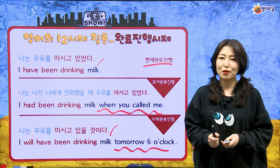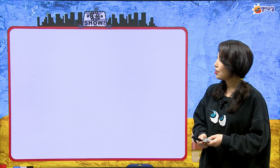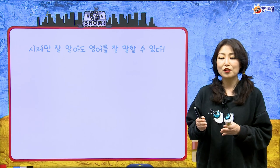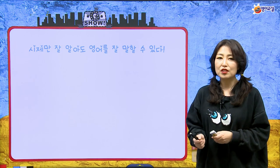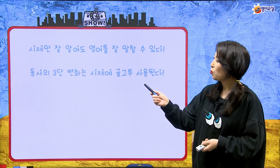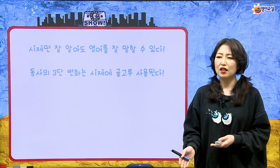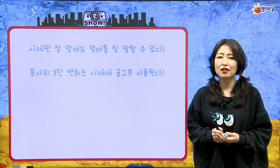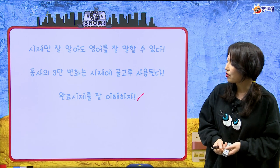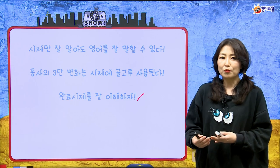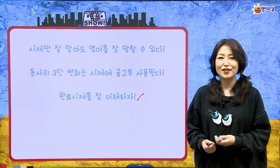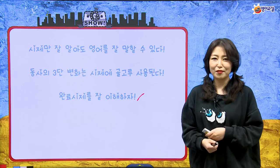완료 시제 예문까지 살펴봤고요. 시제만 잘 알아도 영어를 잘 말할 수 있어요. 시제를 올바르게 쓰는 게 정확한 영어를 구사하는 방법이고요. 영어로 말할 때 시제를 적극 활용하면 좋겠어요. 동사의 3단 변화는 시제뿐만 아니라 수동태 등 여러 형태로 사용되니 꼭 잘 기억하면 좋겠어요. 완료 시제를 잘 이해하고 적절하게 쓰면 영어를 잘하는 것 같다는 느낌을 줄 수 있어요.